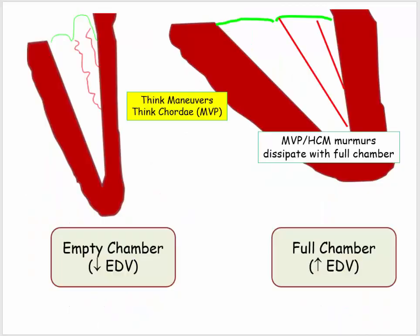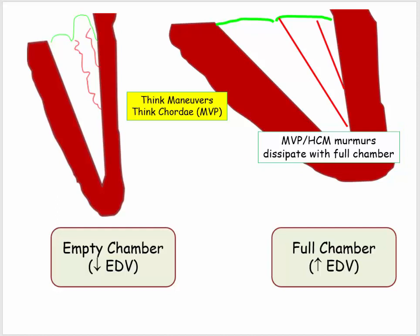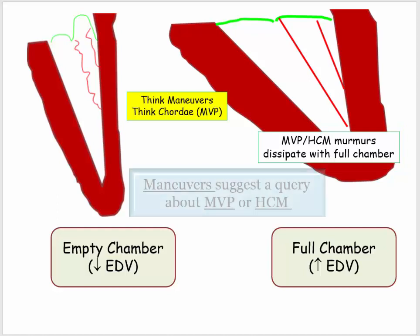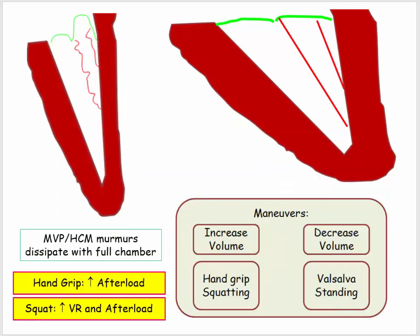Both squatting and isometric hand grip also attenuate the murmur associated with hypertrophic cardiomyopathy. In fact, if they even allude to a maneuver, more likely than not the question and answer will either be hypertrophic cardiomyopathy or mitral valve prolapse.